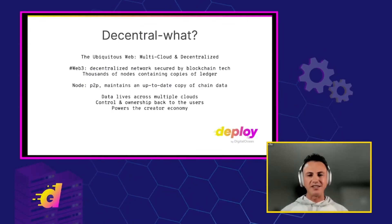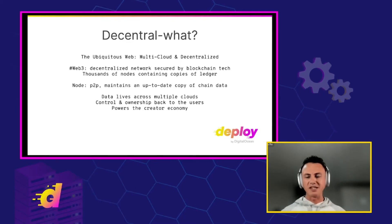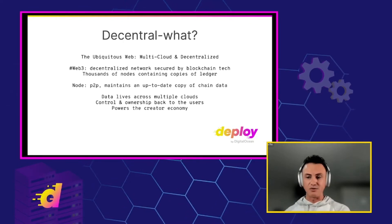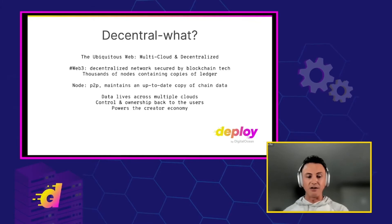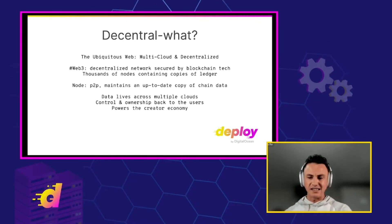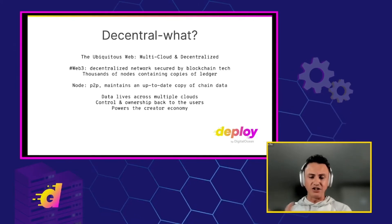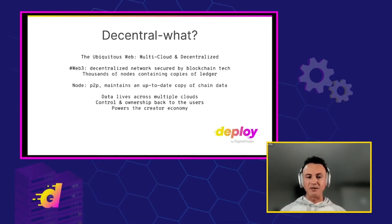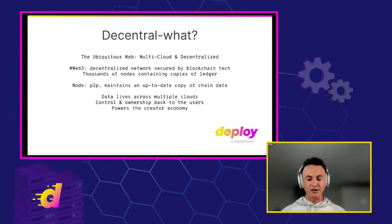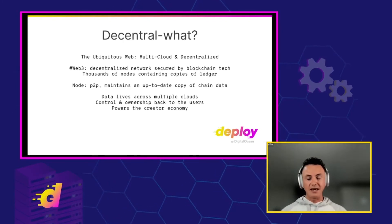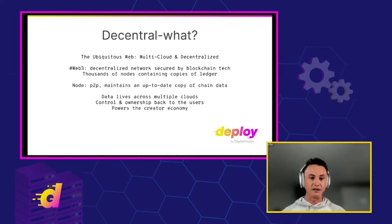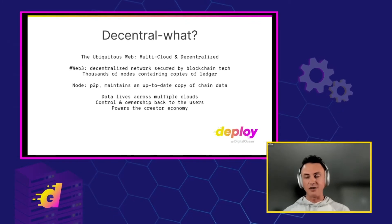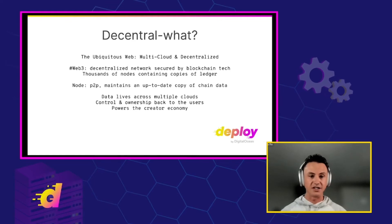Now you may be thinking, what is decentralization? What is Web3? Web1 was a read-only web. Web2 is the web we know today — it's read and write. And Web3 is read, write, verify. It exists in a multi-cloud, distributed way — not in one data center or controlled by one company. It's controlled by the people who use it. You can run a node, companies can run nodes, anyone who wants to participate can run a node. One of the challenges blockchain foundations face today is how to make their network as distributed and decentralized as possible.